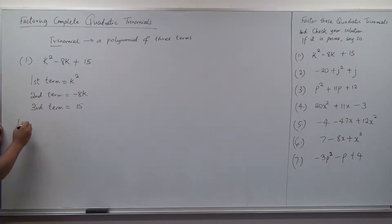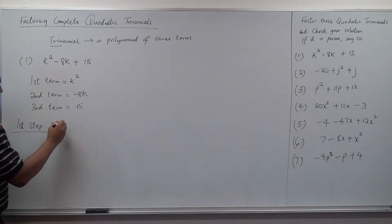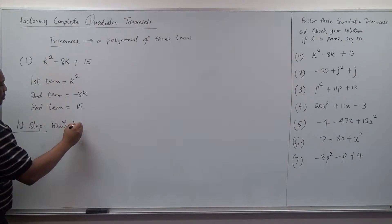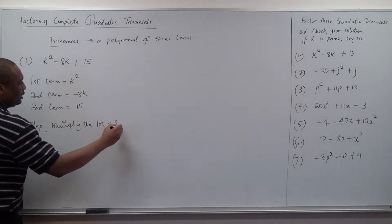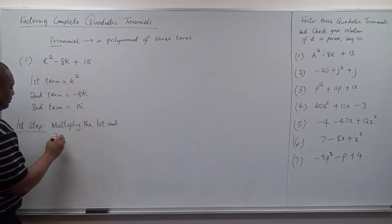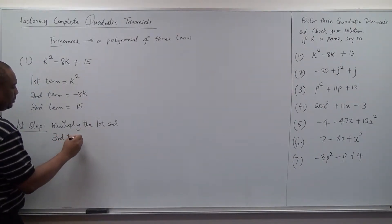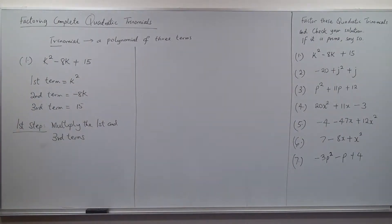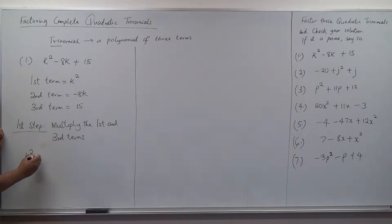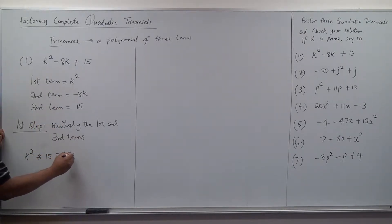So the first step: multiply the first and third terms. That's the first thing we want to do. So this is k squared times 15, which gives you 15k squared.